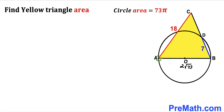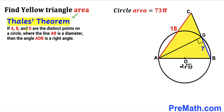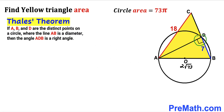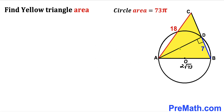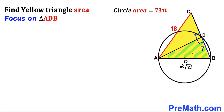Next, I'm going to connect points A and D. By Thales' theorem, if AB is the diameter of a circle and D is another point on the circle, then angle ADB is a right angle (90°). This gives us two right triangles: triangle ADB and triangle ADC, since angle ADB = 90°.